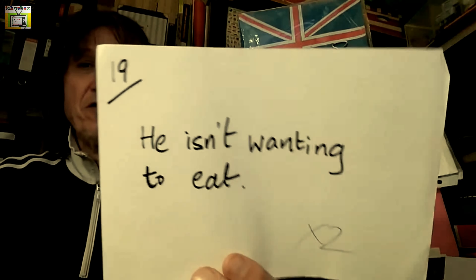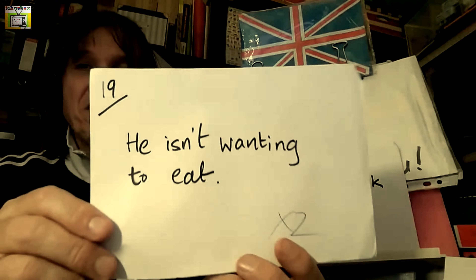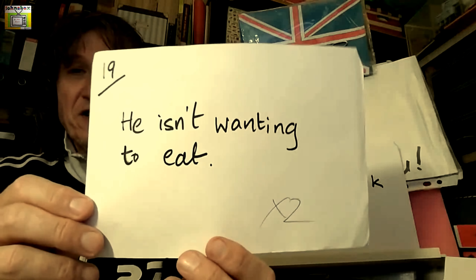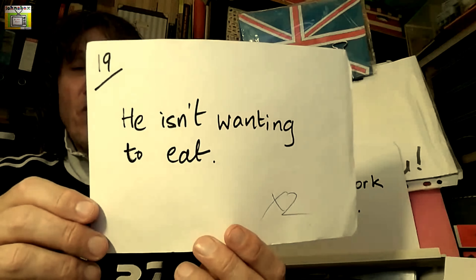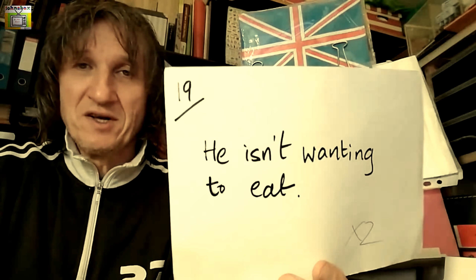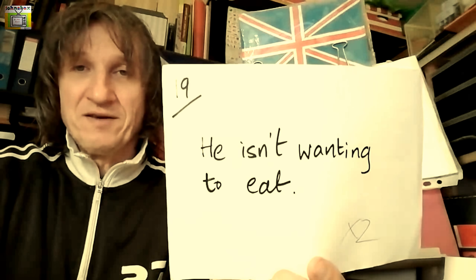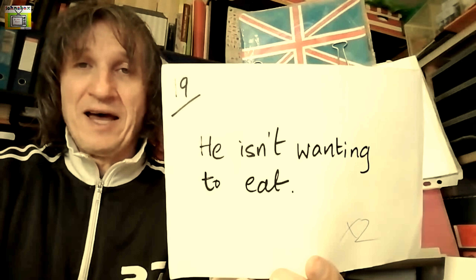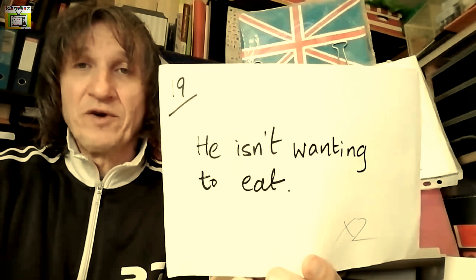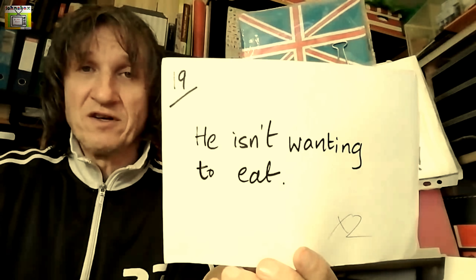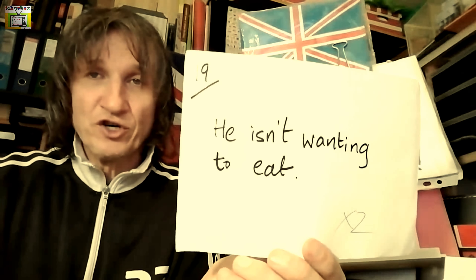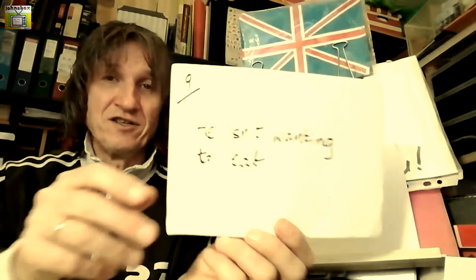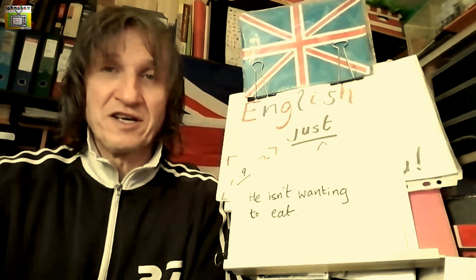Sentence number two: 'He isn't wanting to eat.' There are two mistakes here. 'Want' — we don't put it in the -ing form because it isn't an action verb or an active verb. It's only a desire, and therefore we use the simple tense. Instead of 'isn't', use 'doesn't'; instead of 'wanting', use 'want'. So the answer is: 'He doesn't want to eat.'